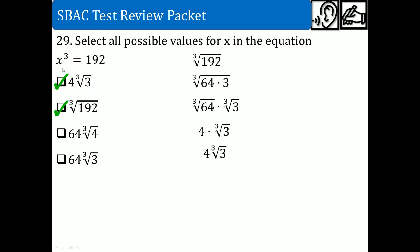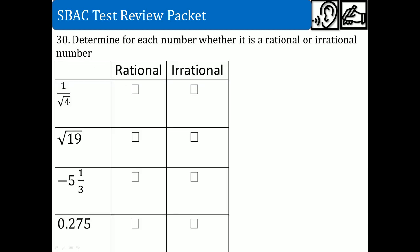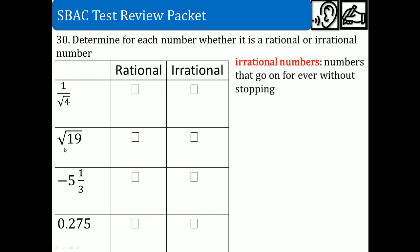Problem 30: determine for each number whether it is rational or irrational. An irrational number is one that goes on forever without stopping and without repeating — that's why it doesn't make sense, which is why it's called irrational.